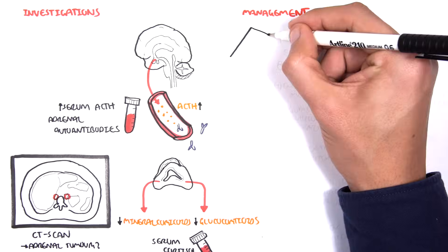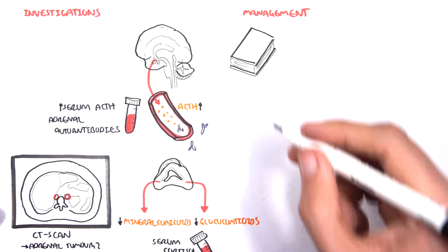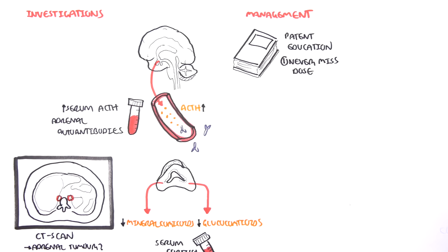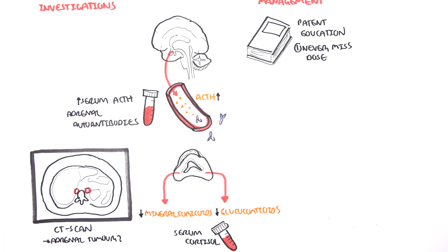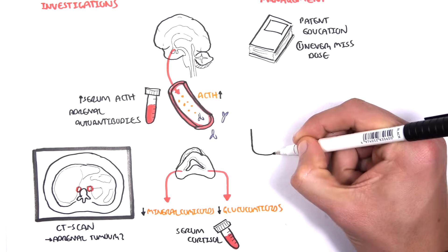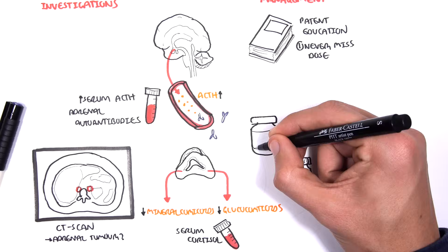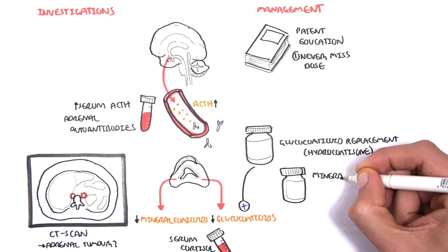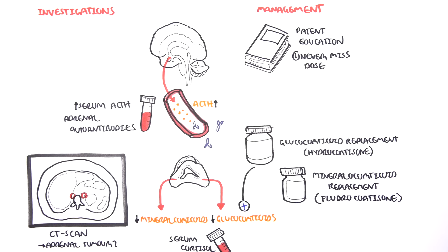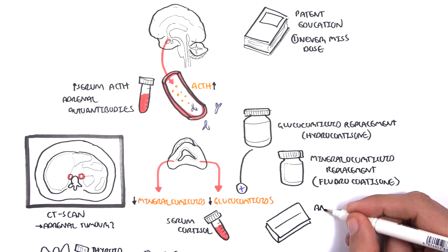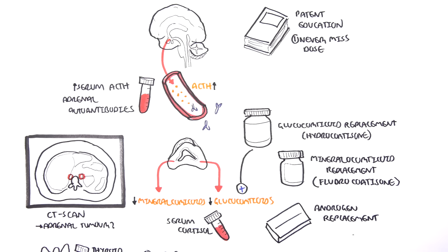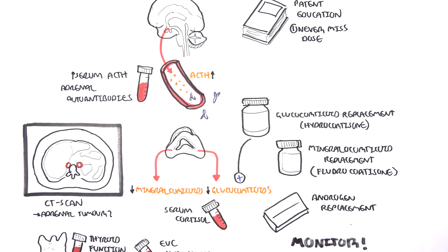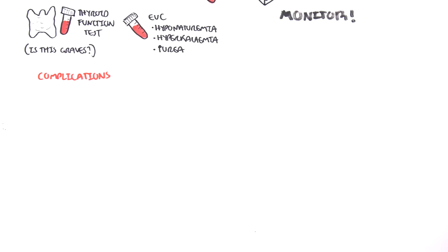The most important part is to educate the patient, particularly to never miss a dose of medication. The medications for Addison's disease include replacing the hormones which are lost: glucocorticoid replacements such as hydrocortisone, mineralocorticoid replacements such as fludrocortisone — which replaces diminished endogenous mineralocorticoid production — and androgen replacements, which are mainly for females. For management, monitoring is important because of the complications associated with Addison's disease, but also because of the medications used.